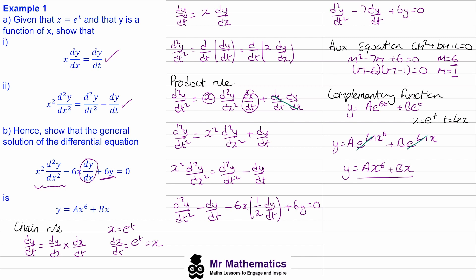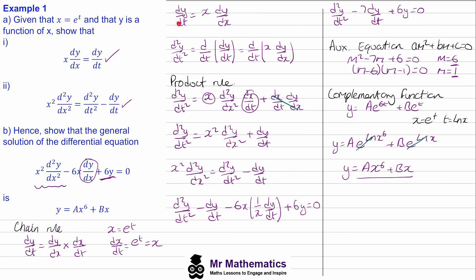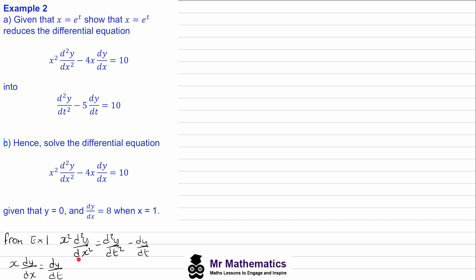In example two we're going to look at using a particular integral with boundary conditions. We've been given that x equals e^t and asked to use this substitution to show the differential equation can be transformed into a reduced form. Because the right-hand side equals 10, this is non-homogeneous, so we'll use the particular integral. Using the results from example one: dy/dt equals x·dy/dx, and x²·d²y/dx² equals d²y/dt² minus dy/dt.